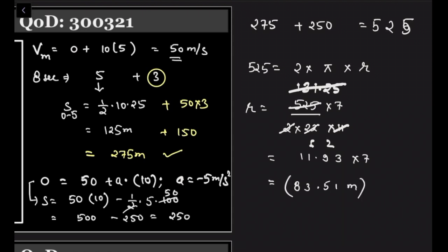This is the radius of the circle if this whole thing happened in a circular track. Got it? Clear? No doubt, very good.